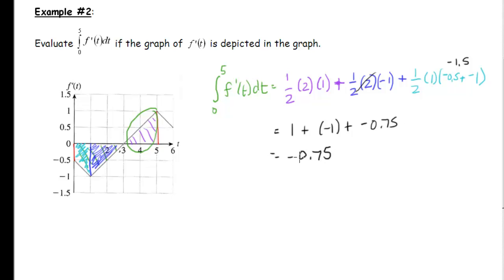Thinking back to the stock price problem, this result means that over those first 5 hours, our stock price actually decreased in value — that's why we have a negative area.